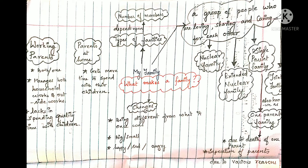Even though families are classified into different types, family means a lot. A family is a group of people who love, share, and care for each other. Next, we are going to learn about change in family — what is change in family? Change is when something is different from what it once was.